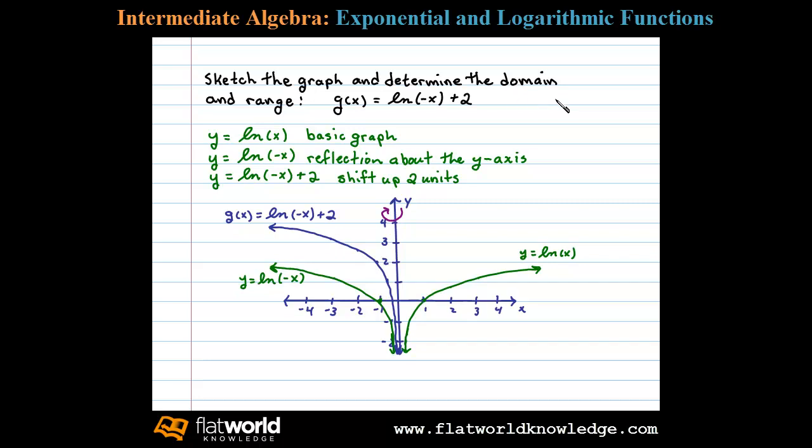Next, let's use that to determine the domain and range. The domain is defined to be the set of all x values for which g is defined. Since the graph is asymptotic here to the y-axis, zero is the non-inclusive upper bound, and all x values less than that are in the domain, as I shade.